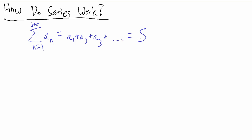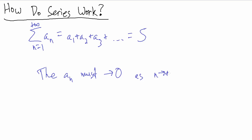We'll call it capital S. How can that actually be possible? Because it seems like if you're adding an infinite amount of positive numbers, how could that possibly converge to something finite? Well, the idea is that a sub n must go to 0 as n goes to infinity.